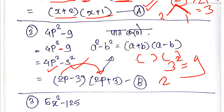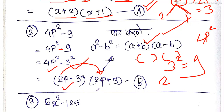The second answer is for 4p² - 9. This is a difference of squares formula: 4p² minus 9 is 2p minus 3 times 2p plus 3. That is the right option.